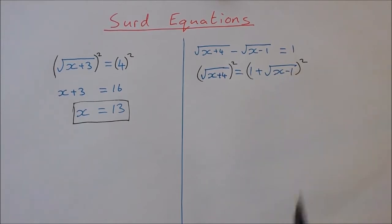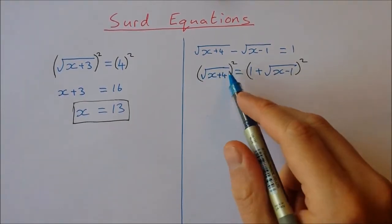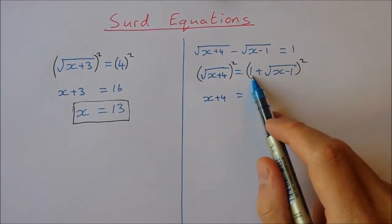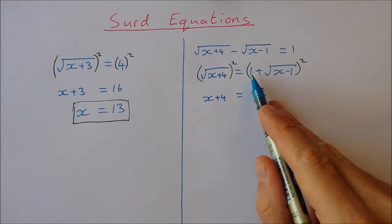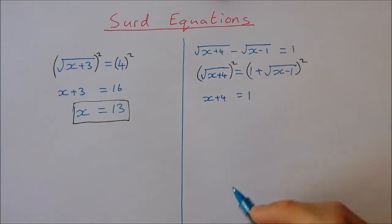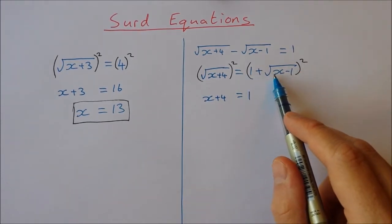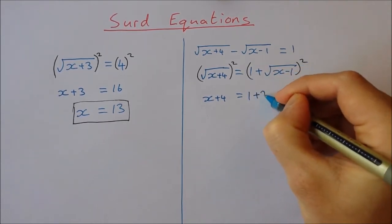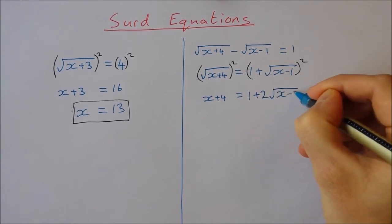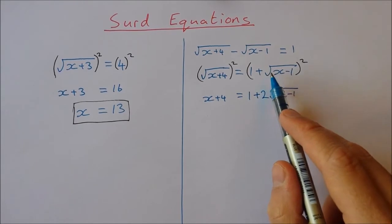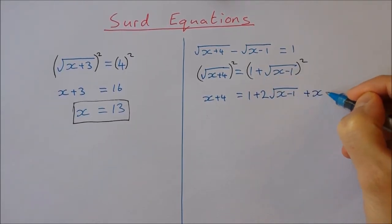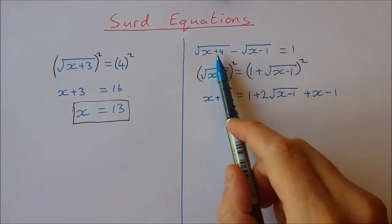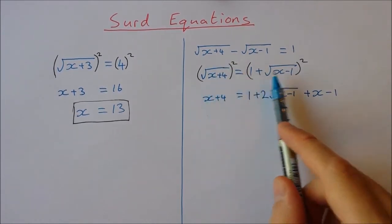The square root of x plus 4 squared is x plus 4. Now squaring out the right side — we have two terms: 1 and the square root of x minus 1. It's the square of the first term: 1 squared is 1; twice the product of 1 times the square root of x minus 1 is plus 2 times the square root of x minus 1; and the square of the square root of x minus 1 is x minus 1.